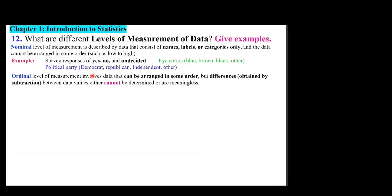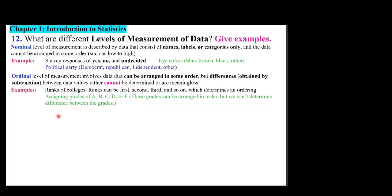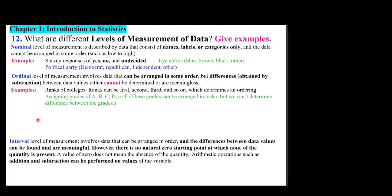Ordinal level of measurement involves data that can be arranged in some order, but differences obtained by subtraction between data values cannot be determined or are meaningless. Examples include ranks of colleges — first, second, third — and letter grades A, B, C, D, which determine an ordering.